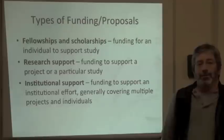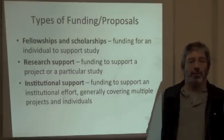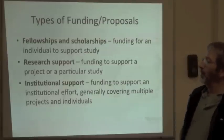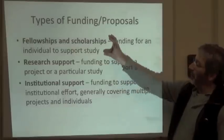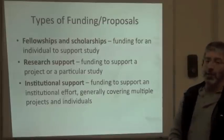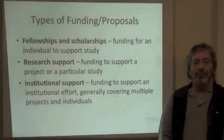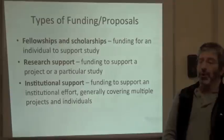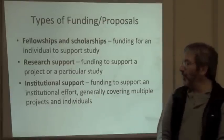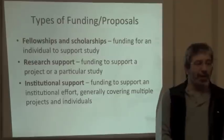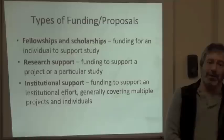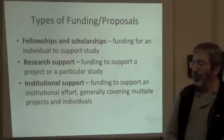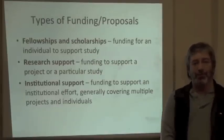I'm going to keep this module quite general so that it's applicable to many different types of proposals and types of funding. You can think of three broad categories. First, fellowships and scholarships — proposals that request funding to support studies for an individual. Second, research support — funding to support a particular study. And finally, the biggest in scale, institutional support — funding to support a broad group or an institution, which will often serve as an umbrella for many different projects.